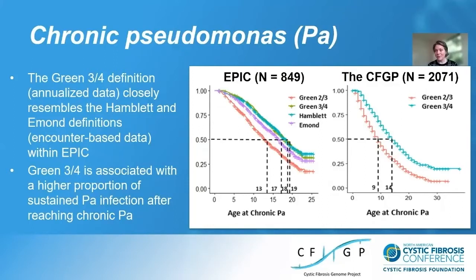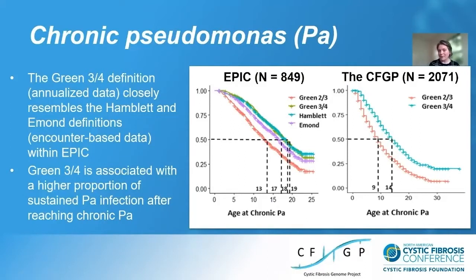These figures show Kaplan-Meier curves where the x-axis is the age at chronic PA, and the vertical axis is the proportion of the sample that still does not have chronic PA. The horizontal dotted line shows the age at which 50% of the sample meets each definition. We were pleased to see that the green 'three out of four' definition, which uses annualized data, is really similar to the Hamlet and the Eman definitions, which use encounter-based data. That's very promising.